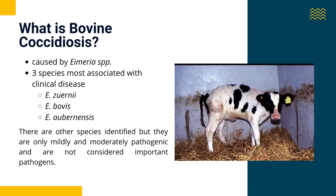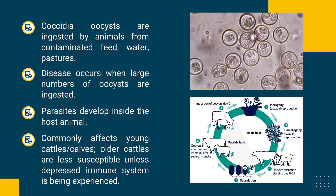Bovine coccidiosis is caused by Eimeria spp. Three species are most associated with clinical disease: first is E. zuernii, second is E. bovis, and third is E. auburnensis. There are other species identified but they are only mildly to moderately pathogenic and are not considered important pathogens. Coccidia oocysts are ingested by animals from contaminated feed, water, and pastures.